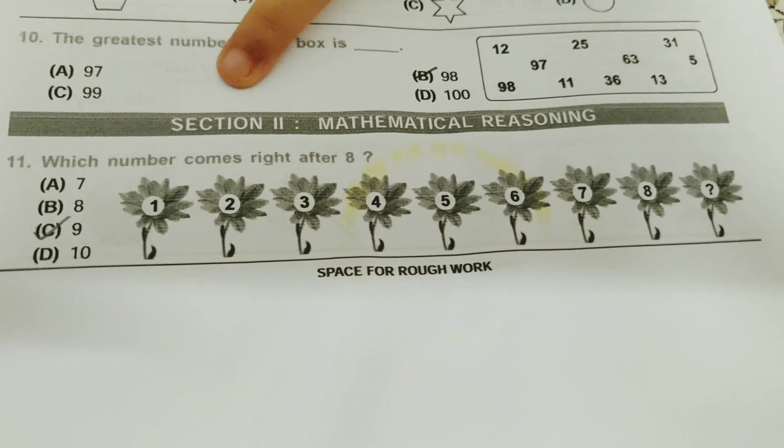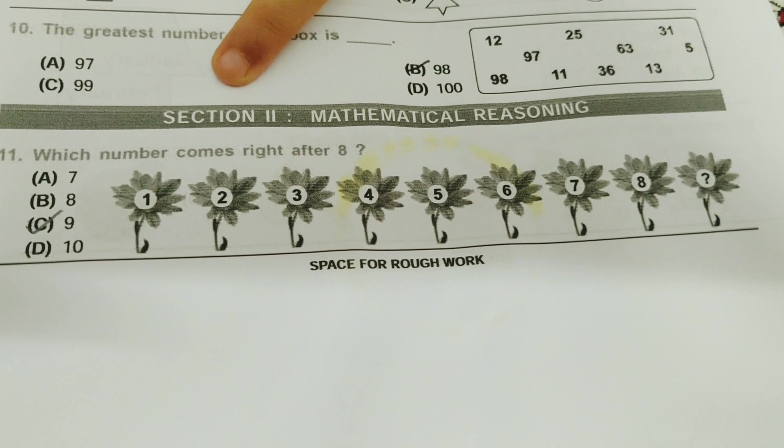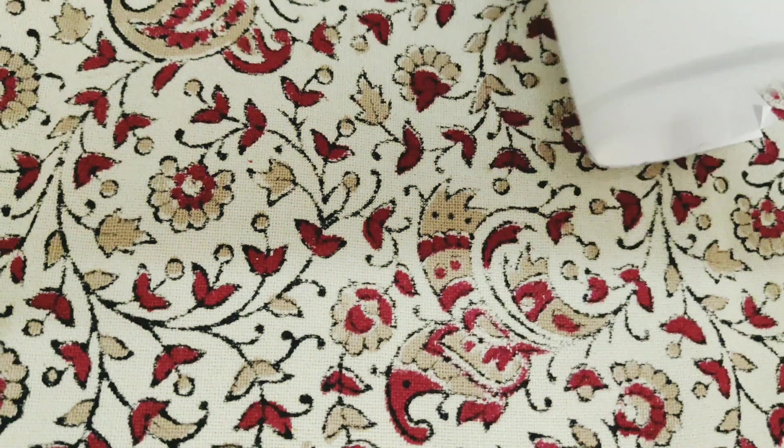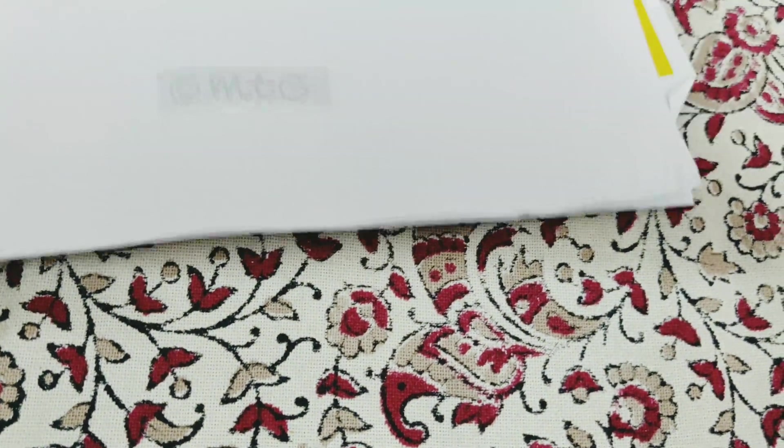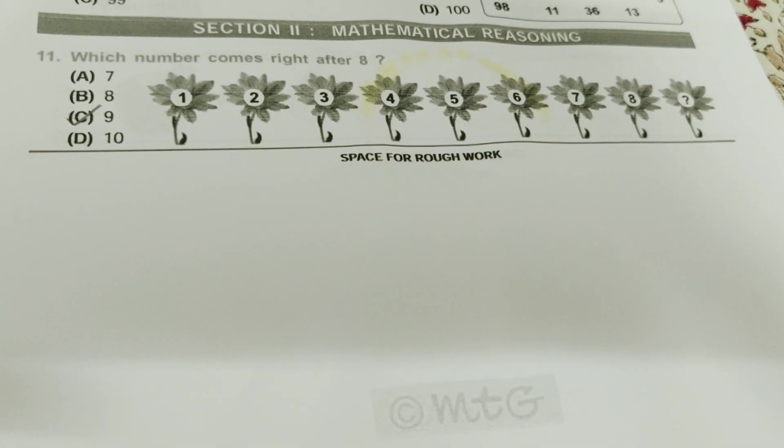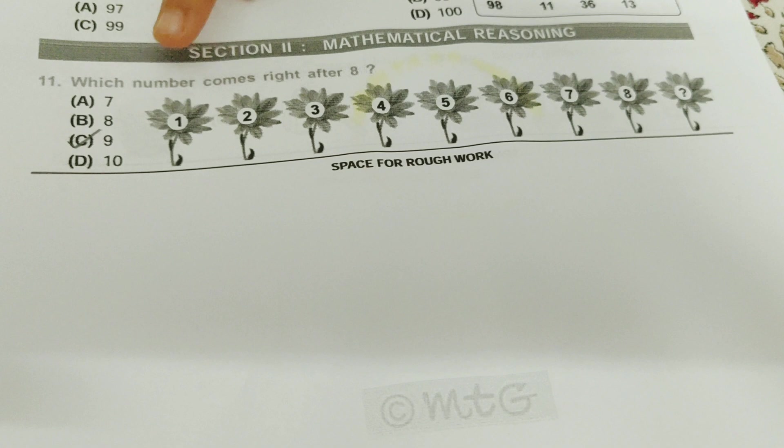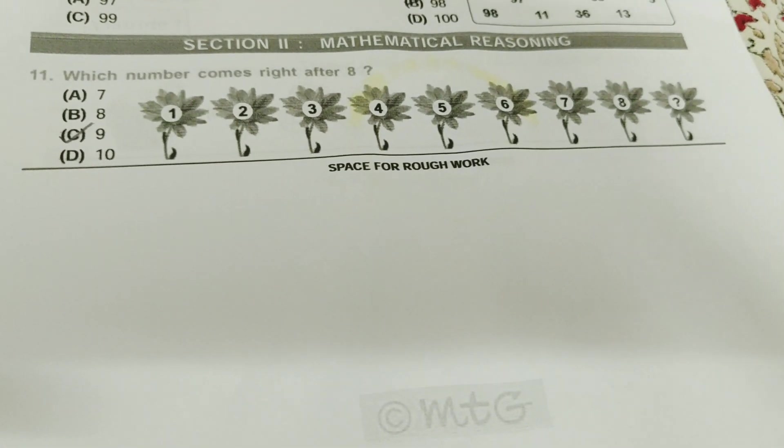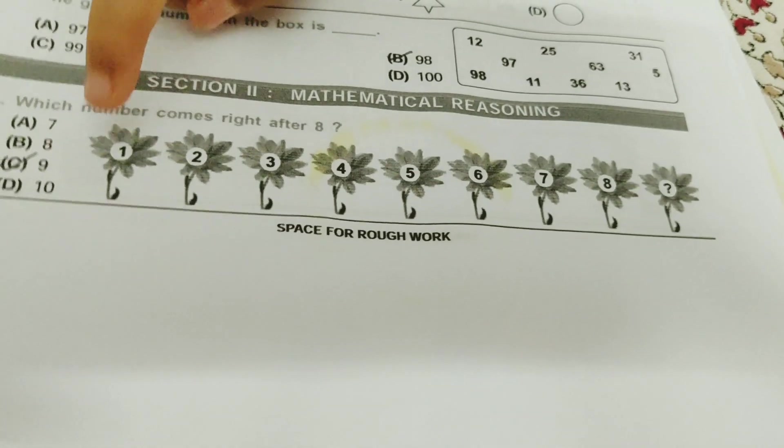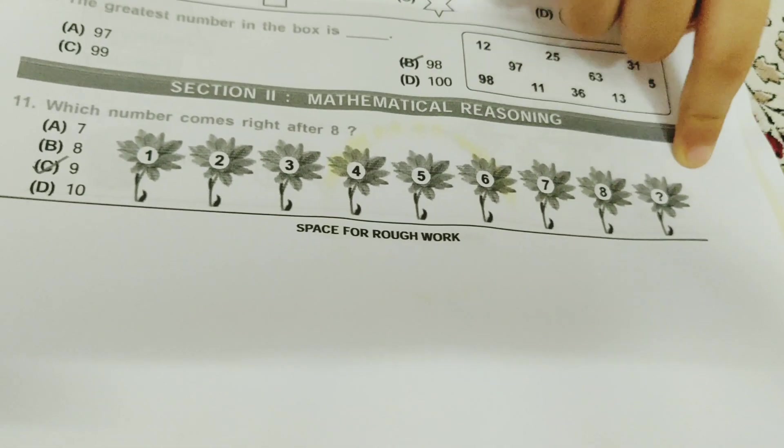And now we have come to this second session, mathematical reasoning. So here was logical reasoning. Now it's mathematical reasoning. Which number comes right after 8? So you just need to see this pattern because it may just change right, like 2, 4, 6, 8, something like that. 1, 2, 3, 4, 5, 6, 7, 8. So it's just 1, 2, 3. So after 8 comes 9. Really easy.